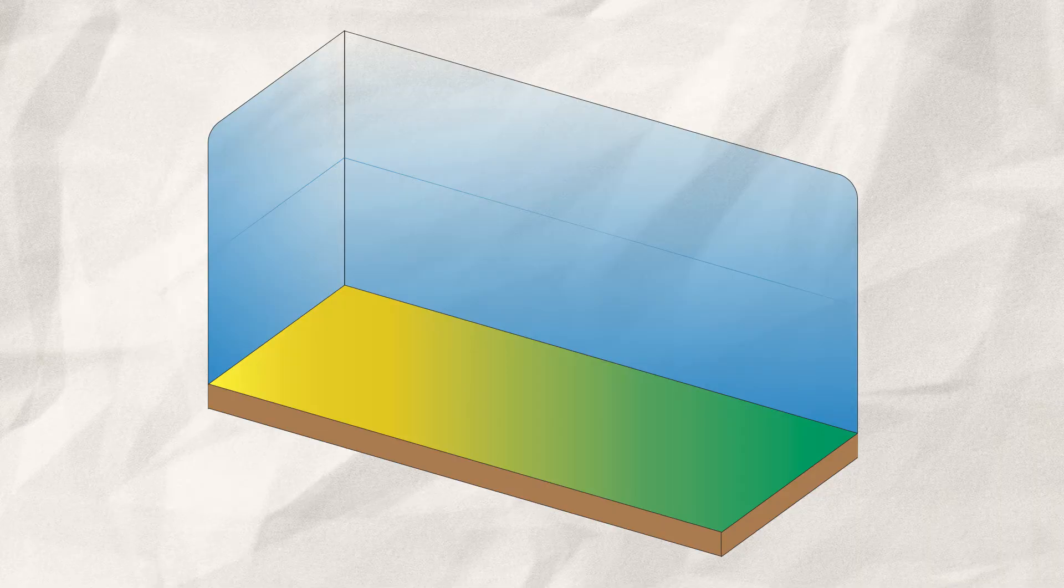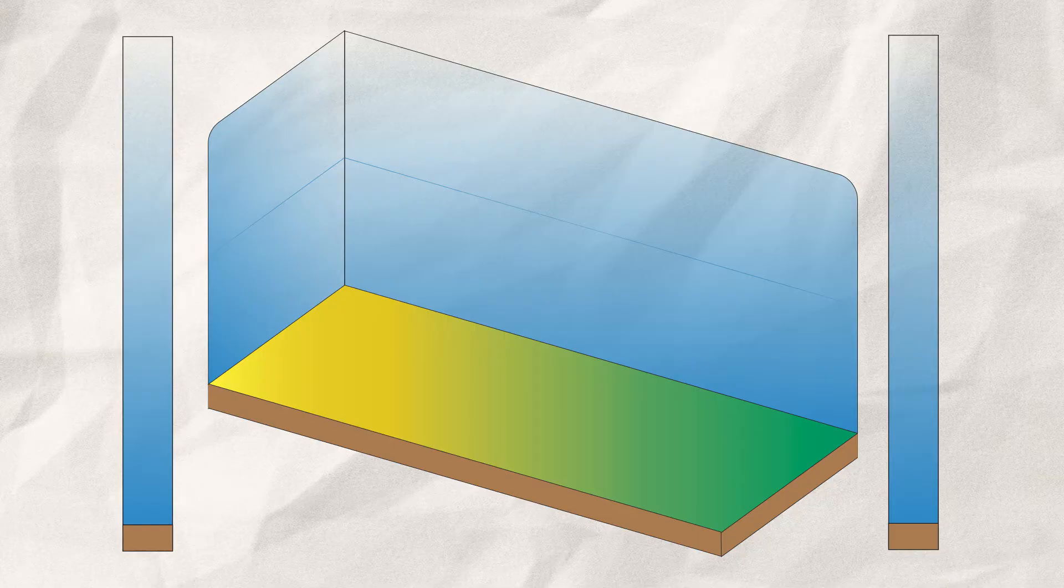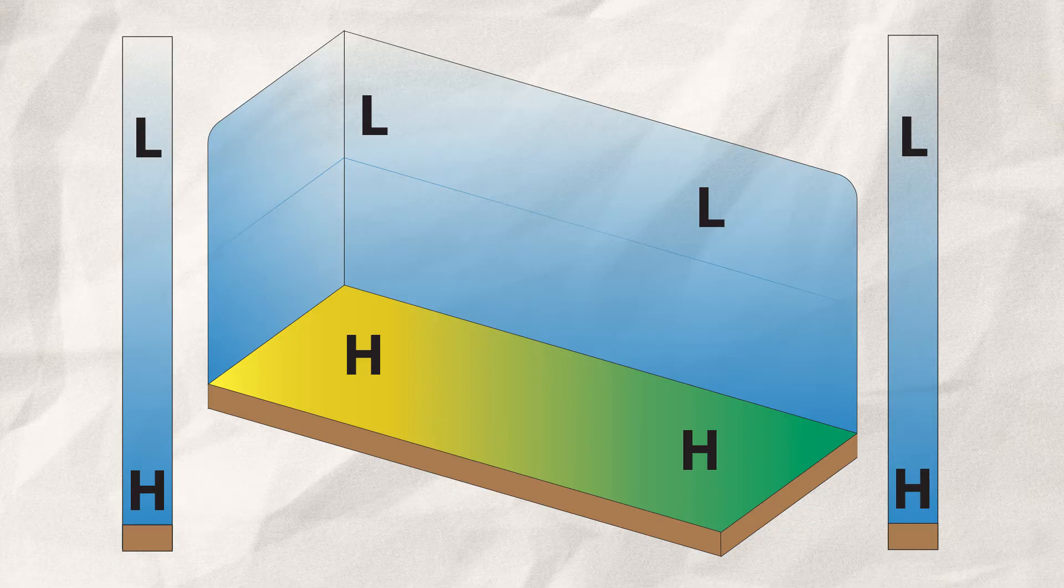Imagine this box as our atmosphere. Just like our atmosphere, the pressure decreases with rising altitude because of gravity. So we've got the colder, low pressure area on top, and the warmer, high pressure area on the surface. So far, nothing happens.